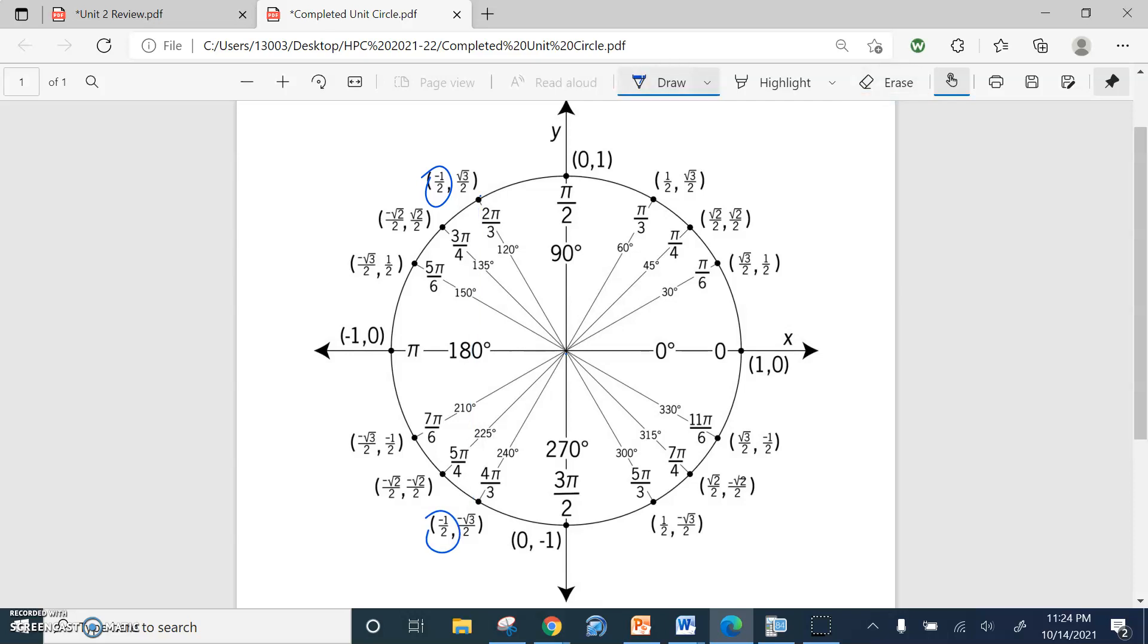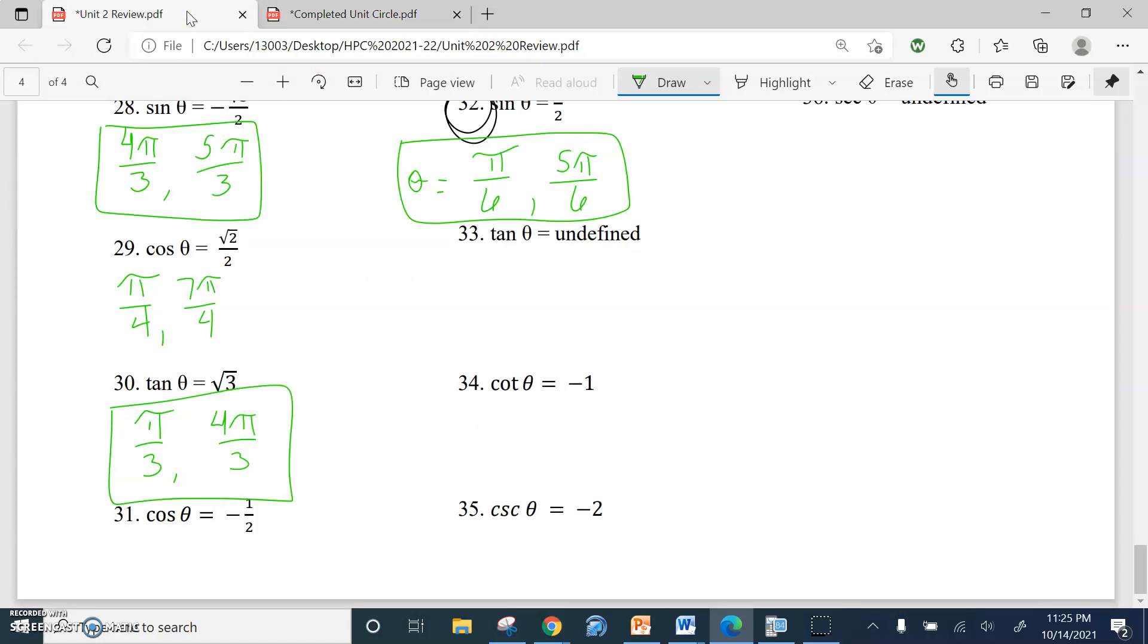So our answers are going to be 2 pi over 3 and 4 pi over 3. And again, all it is is using the idea that cosine goes with x, and our x-coordinate on the unit circle has been given right here. So 2 pi over 3 and 4 pi over 3. Those are my answers.